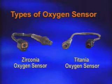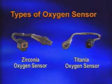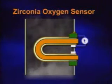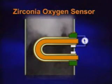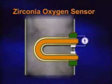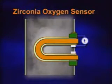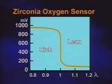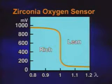There are two types of oxygen sensors: the zirconia oxygen sensor and the titania oxygen sensor. The zirconia oxygen sensor generates a small voltage depending on the exhaust gas condition. The normal voltage range is 0.2 to 0.8 volts. 0.2 volts indicates a lean mixture and 0.8 volts indicates a richer mixture.